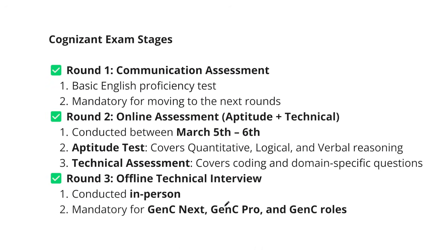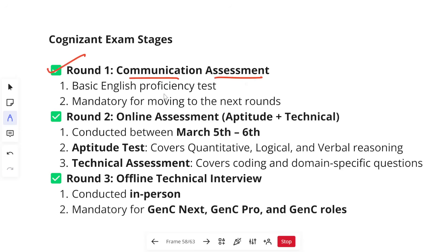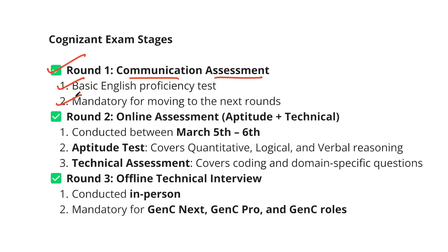Let's understand the exam stages of Cognizant GenC. Your first round is usually the communication round, which most of you have completed — it includes a basic English proficiency test and is mandatory for moving to the next rounds. Many were asking whether the communication round is an elimination round or has no importance. Definitely it has its own importance, because when you get shortlisted for interviews, the result of all three assessments — communication, aptitude, and technical — is considered.